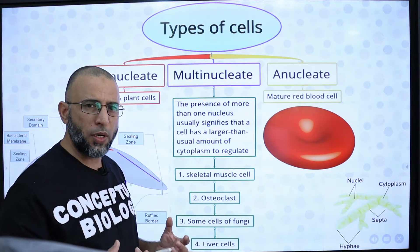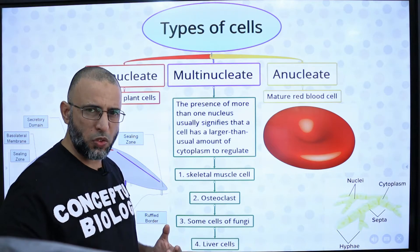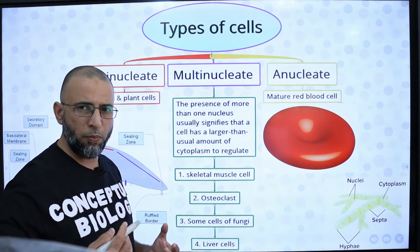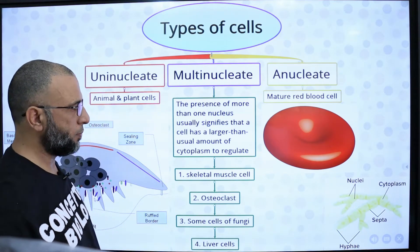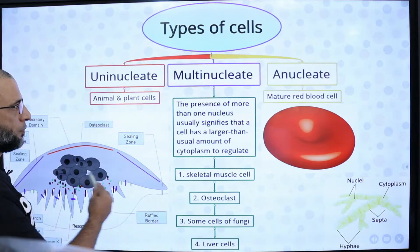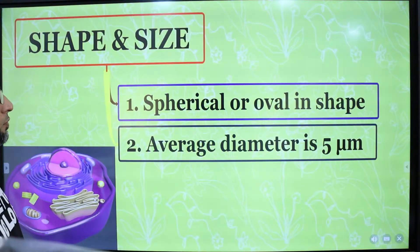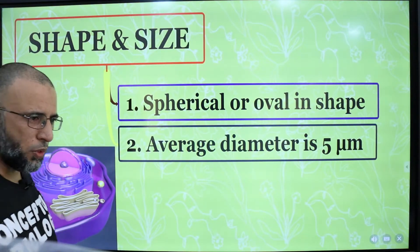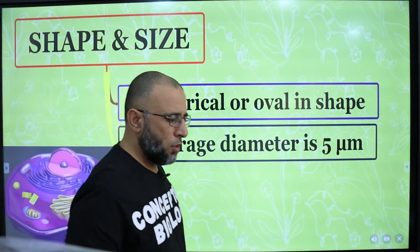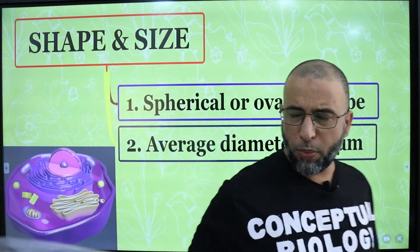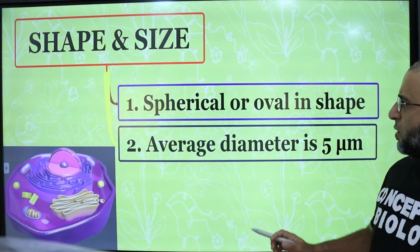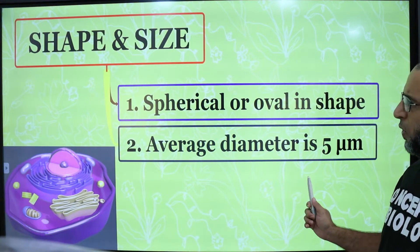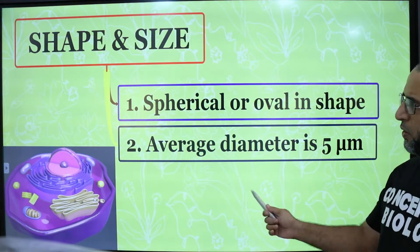Newly formed red blood cells have a nucleus, but when they become mature they lose their nuclei. Regarding shape and size of the nucleus: the shape of the nucleus is spherical and the average diameter is 5 micrometers.